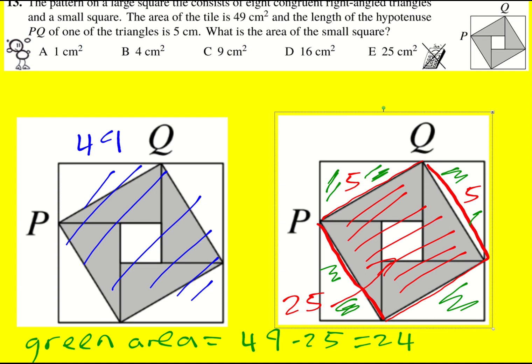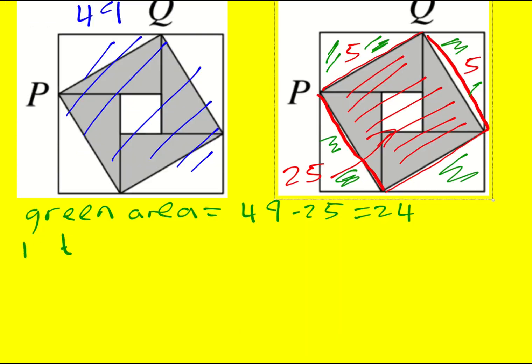But they're four congruent triangles. So one triangle, the area is going to be 24 over 4, which is 6.